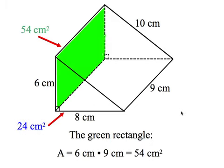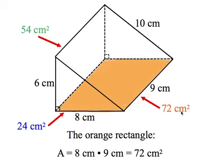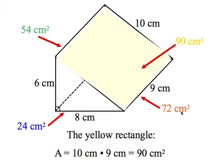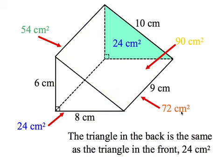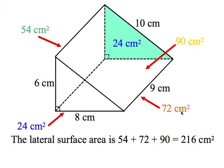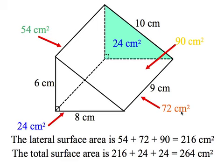We start with the rectangle shaded green: six by nine gives 54 square centimeters. The bottom rectangle is orange — eight by nine — 72 square centimeters. The top rectangle uses the 10: ten centimeters by nine centimeters is 90 square centimeters. The triangle in the back is the same as the one in front — still 24 square centimeters. The lateral surface area is the sum of the three rectangles: 216 square centimeters. Adding the lateral surface area plus the two triangles, the total surface area is 264 square centimeters.